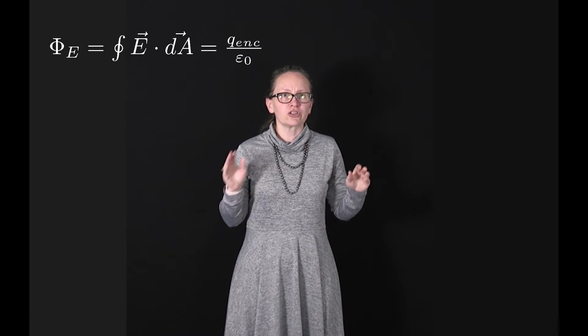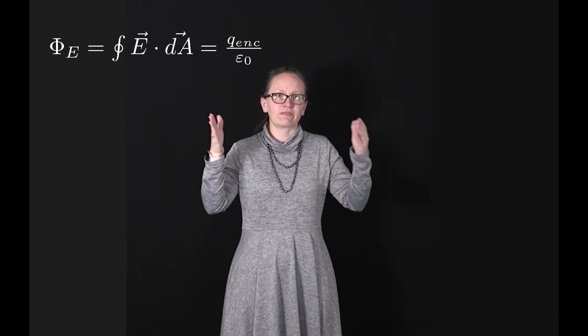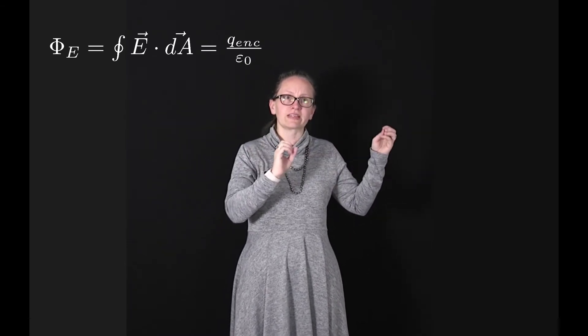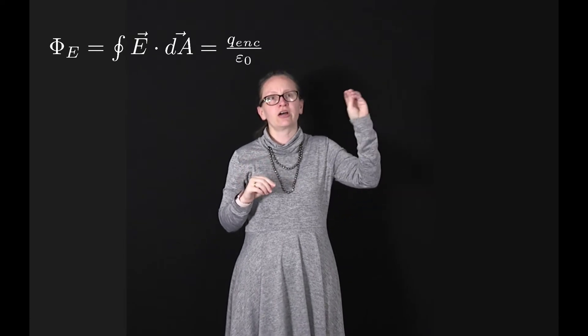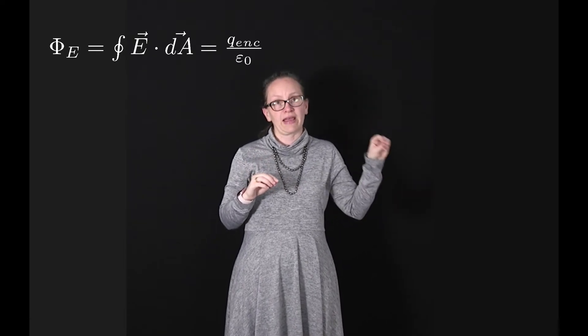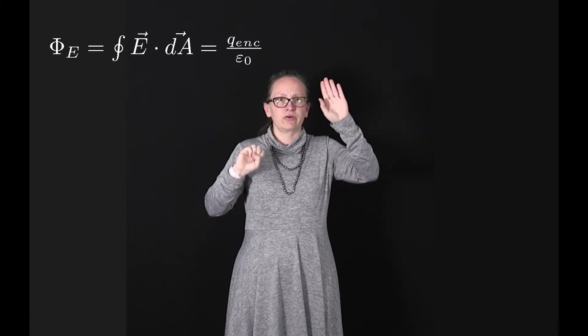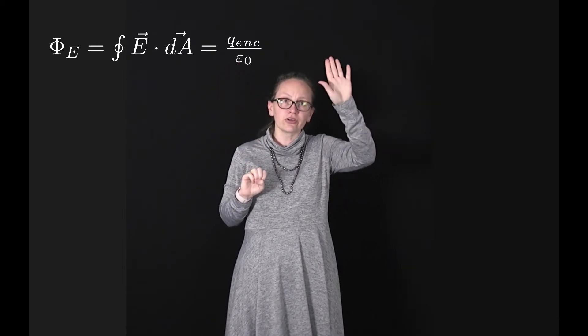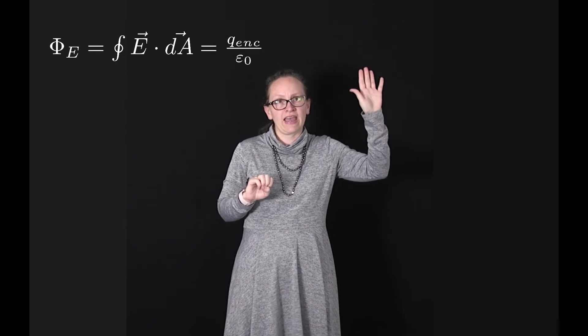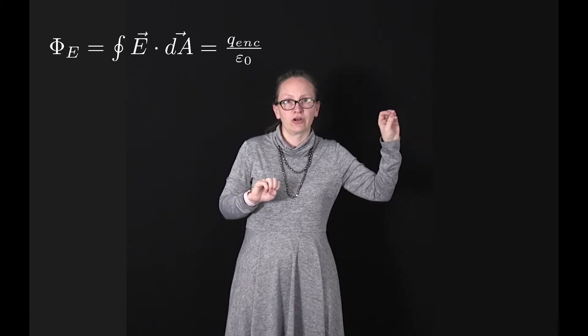So when we were learning about electric fields, we saw Gauss's law which told us about the electric flux through a closed surface and that it was equal to the charge enclosed within the surface divided by ε0. So we could write this as φE is equal to the integral around the closed surface of E dot dA, which is equal to q enclosed over ε0.